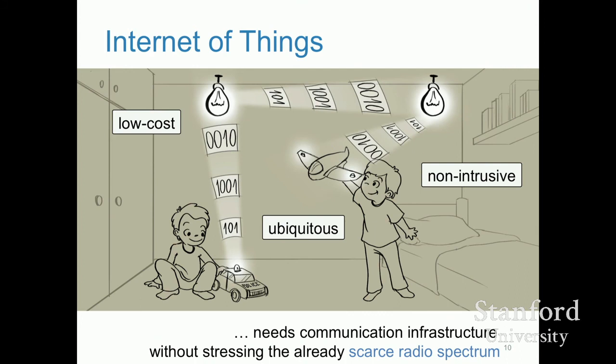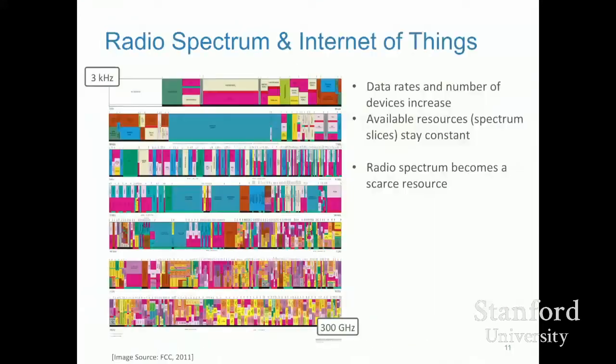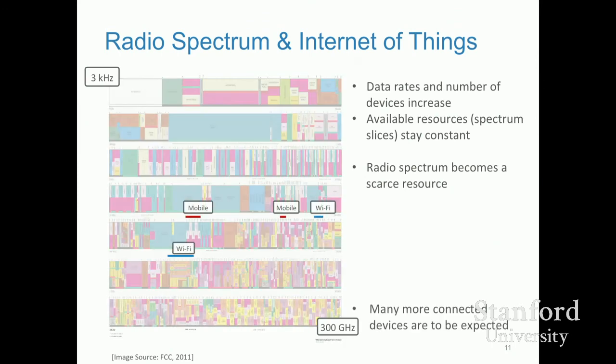Here in the US, the FCC is the master of the spectrum. They've doled out a lot of spectrum to all kinds of groups. Looking at the huge amount of spectrum available, only a tiny bit is actually available for Wi-Fi or mobile — the rest is used for other purposes — making the spectrum already very crowded.